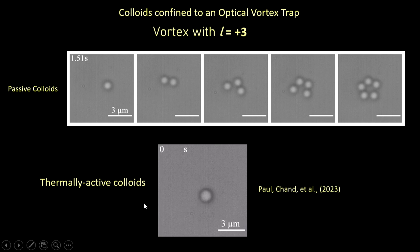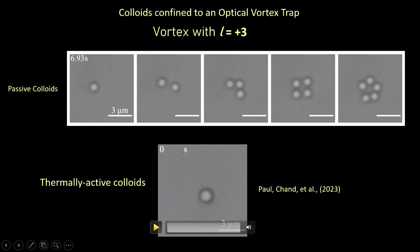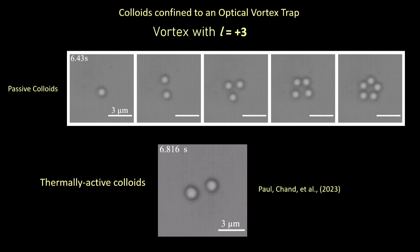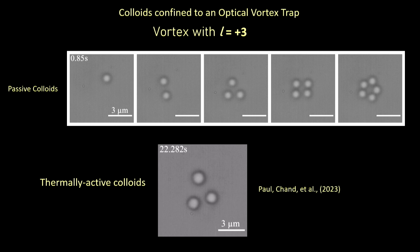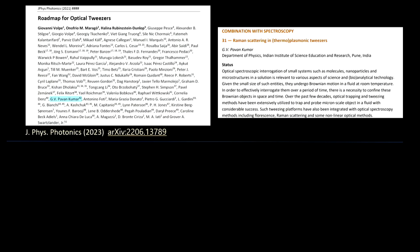The rotation we observe in the optical vortex case is due to optical momentum transfer, unlike the previous case where heating was transferring momentum. The dynamics when thermally active colloids interact in the vortex are not trivial — particles come close, go away, and form very interesting non-linear dynamics that we are still trying to understand.